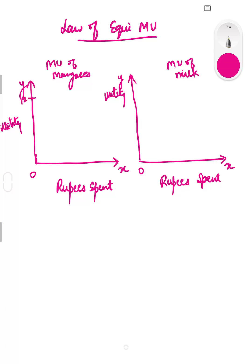For that we will be taking the values 12, 10, 8, 6, 4, and 2 on the utility axis. Similarly we will take values 12, 10, 8, 6, 4, and 2 on the second set of axes as well.